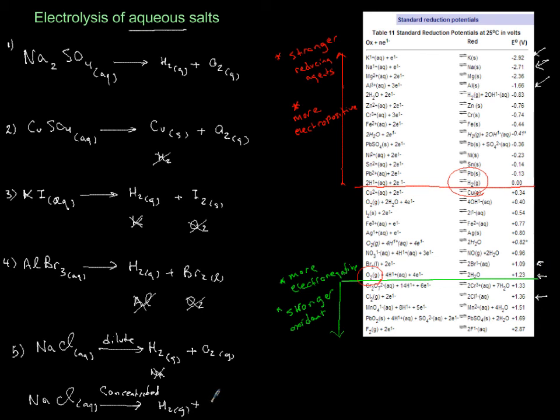But this time you will also produce chlorine because of its concentration. 1.36 is very close to 1.23, so in this case you will produce chlorine. So for concentration you have to be careful in terms of chlorides.